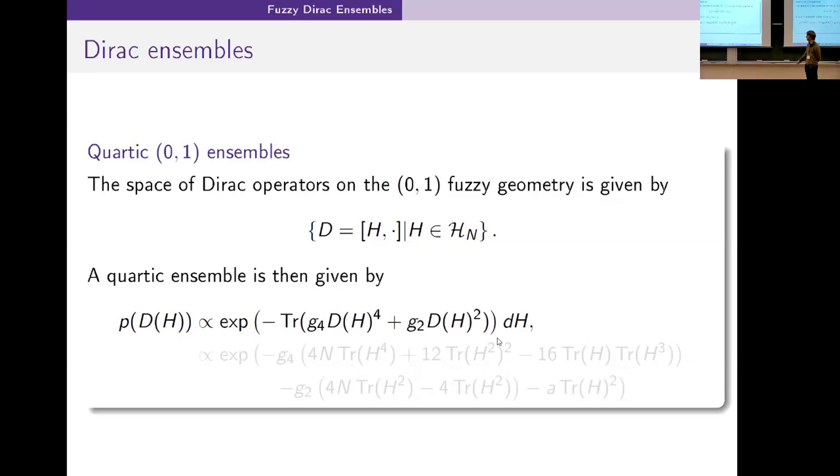You can phrase this ensemble in terms of H and that gives you a random matrix model essentially. This random matrix model, while this single matrix, has the complicating factor that it is multi-trace, which you can see most clearly here in this trace of H times trace of H cubed.